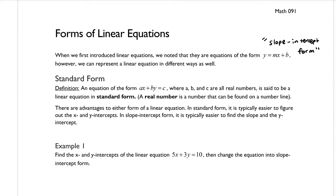The next form we're going to introduce is called standard form. An equation of the form ax plus by equals c, where a, b, and c are all real numbers, is said to be a linear equation in standard form. A real number is a number that can be found on a number line. There are advantages to either form: in standard form it is typically easier to figure out the x and y intercepts, while in slope-intercept form it is typically easier to find the slope and the y-intercept.